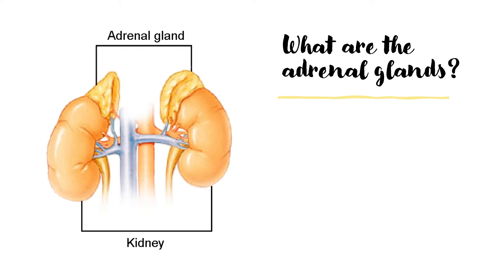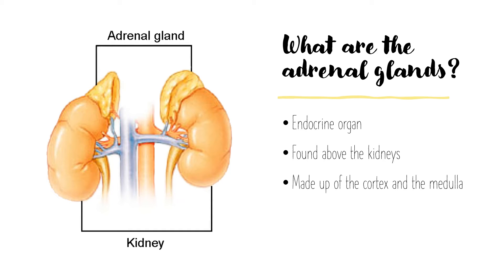So let's start with what the adrenal glands are. First of all, they're an endocrine gland, so remember these are responsible for secreting hormones. This particular gland is found above the kidneys, as the word adrenal actually comes from Latin — ad meaning near, and renal meaning kidney. The adrenal glands are made up of the cortex and the medulla.